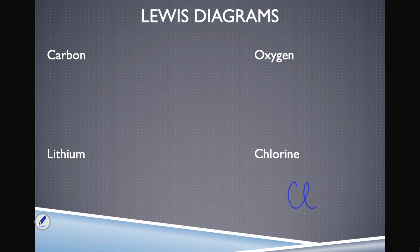I draw the seven electrons for chlorine: one on top, one on the right, one on the bottom, one on the left — each side gets one first. Then I start pairing: five, six, seven. There is the Lewis diagram for chlorine.